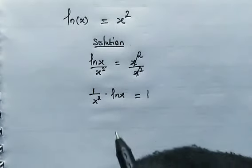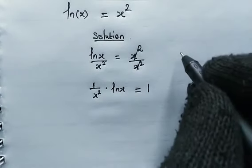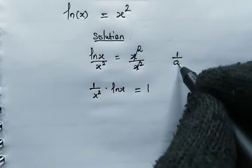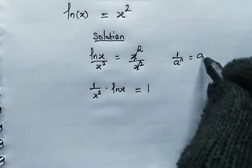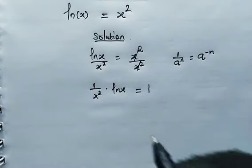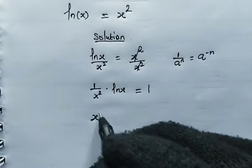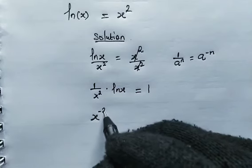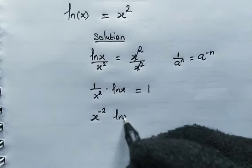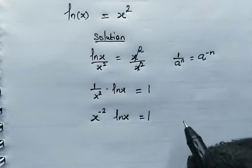This will cancel this. Then remember, when we have 1 all over a to the power of n, we can write it as a to the power of negative n. So from here, this will be x to the power of negative 2 multiplied by the natural log of x, and this is equal to 1.